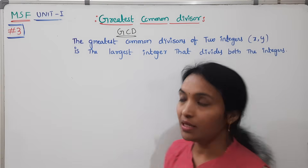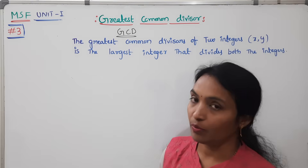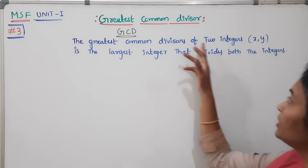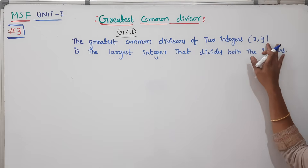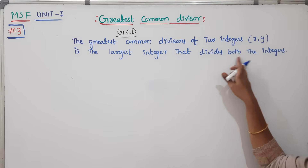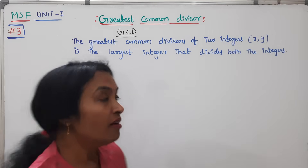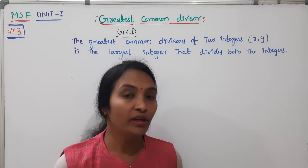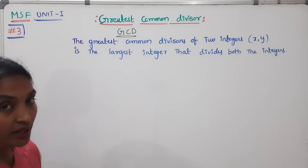What is GCD? GCD is the Greatest Common Divisor. We will check in class what exactly is the greatest common divisor of any two numbers A, B — it is the largest integer that divides both integers. The largest common integer is the divisor — that is the Greatest Common Divisor.